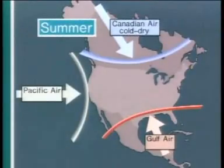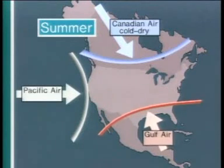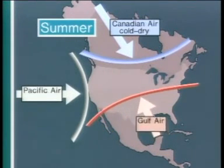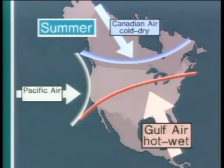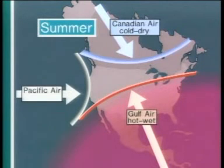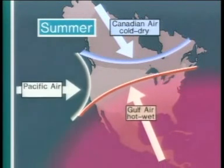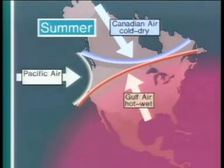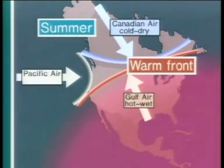During the summer in North America, the Gulf air pushes forward. This air is hot and wet — hot because it originates closer to the equator, and wet because it originates over the ocean and picks up a lot of water vapor. When Gulf air pushes forward, the front is called a warm front.